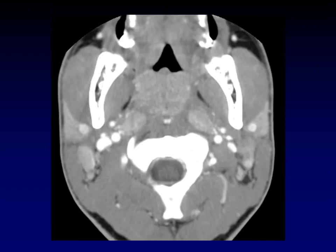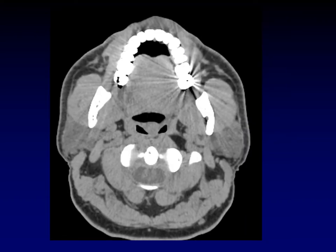Another way to get enlarged lymph nodes in the retropharyngeal space is reactive lymphadenopathy. This is a child with acute tonsillitis, and you can see reactive enlarged lymph nodes in the retropharyngeal space bilaterally, pushing the parapharyngeal fat predominantly anteriorly and a little bit laterally. And just for completeness, a lipoma arising in the retropharyngeal space — unlikely to fool anyone given its expected low density on CT, though it might be more confusing on a non-fat-suppressed post-contrast MRI.